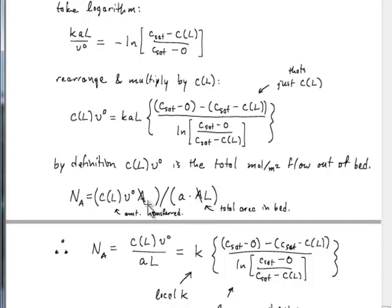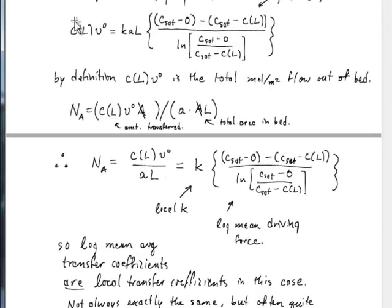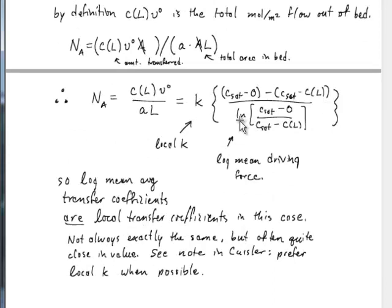The two factors of area cancel, and what we're left with is that N_A equals the concentration at the exit multiplied by the superficial velocity, divided by the packing area per volume and the length of the bed. Just by using the formula derived above and inserting the expression for c(L) times V, we get a rather nice result: the local mass transfer coefficient is multiplied by a log mean concentration driving force. People commonly identify a log mean driving force mass transfer coefficient.